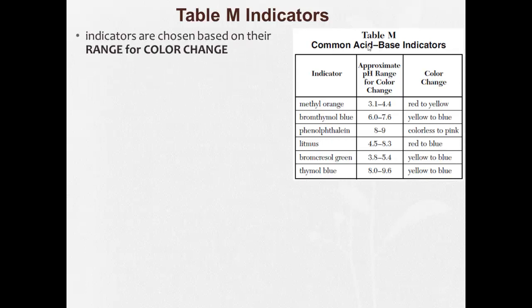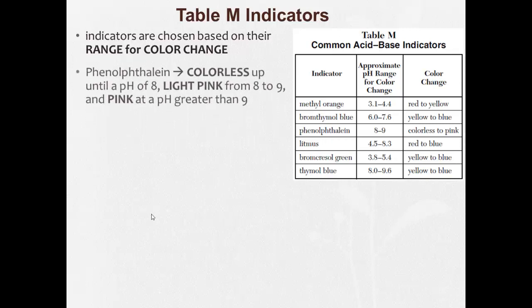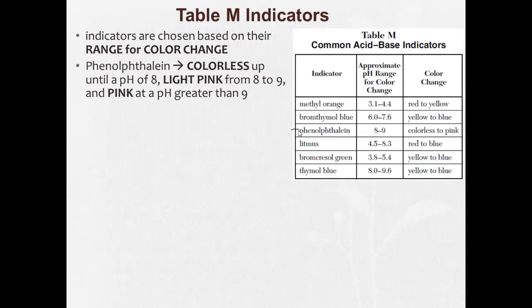So table M indicators are the ones you have to know. Indicators are chosen based on their range for color change. For example, phenolphthalein is colorless up to a pH of about 8, light pink between 8 and 9, and pink at a pH greater than 9.